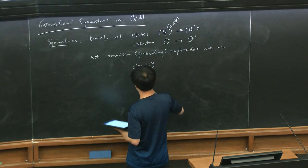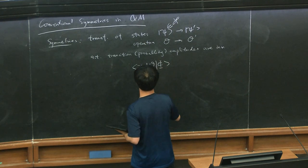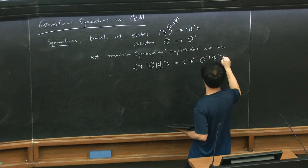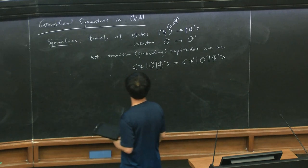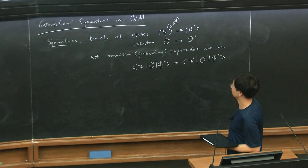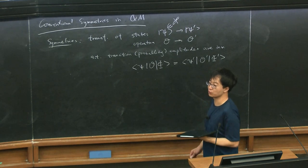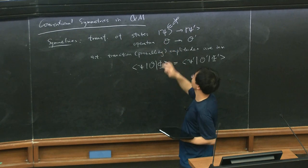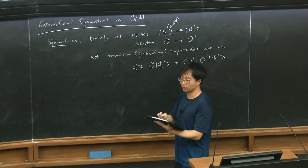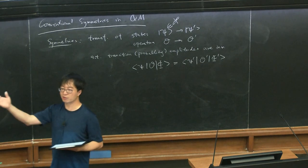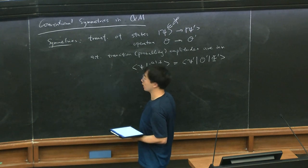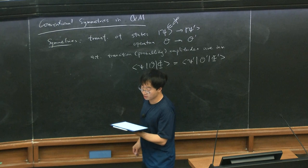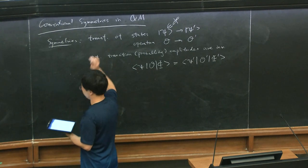A question from the audience: why should it not be invariant up to an overall phase? Because we're talking about the amplitudes — if you're just acting on states, the state is defined physically up to an overall phase. But the key is that this phase is universal for the Hilbert space, so when you look at this bracket it will cancel. That phase is known as the projective phase — a refinement of the original discussion of Wigner.